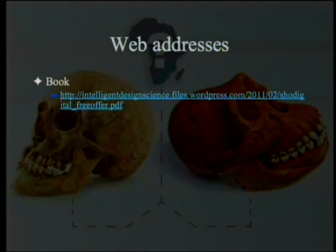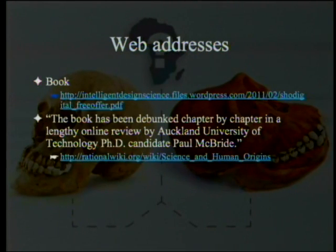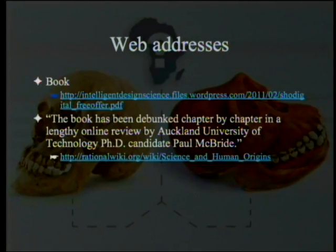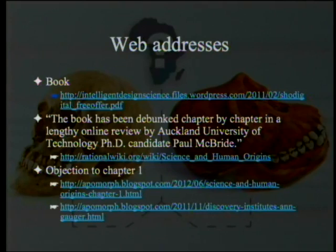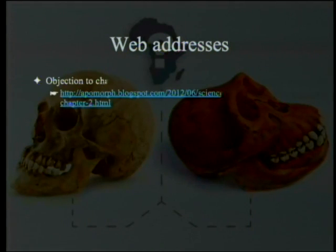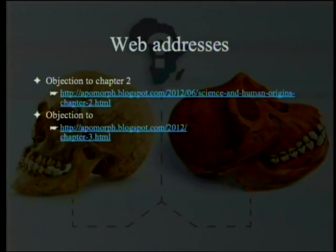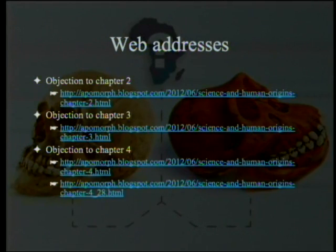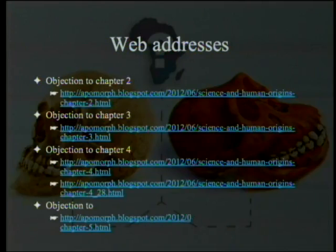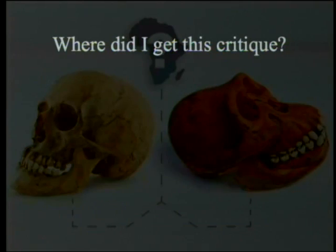The book is available online and has been reviewed by Paul McBride of Auckland University in New Zealand, a review recommended by others. The objections to Chapters 1 through 4 can be found at the listed website, and now we're covering Objections to Chapter 5.